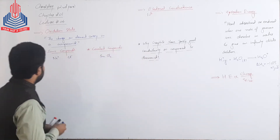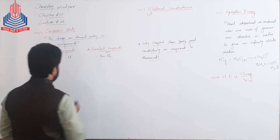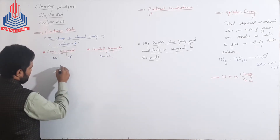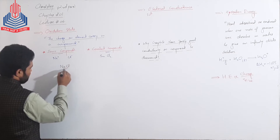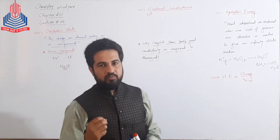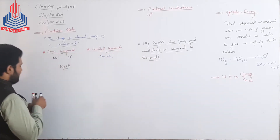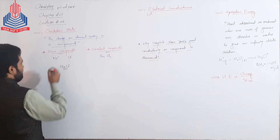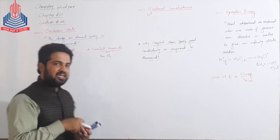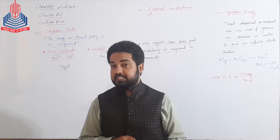ہمارے پاس generally two types کے compounds ہوتے ہیں: Ionic Compounds اور Covalent Compounds. Ionic Compound, جیسے NaCl, Sodium Chloride — یہ Ionic Compound ہے، تو it will be formed from ions. اور Ionic Compounds میں جن ions سے مل کر Ionic Compound بنا ہوگا، ان کے اوپر جتنا charge ہوگا، وہی ان کی Oxidation State ہوگی۔